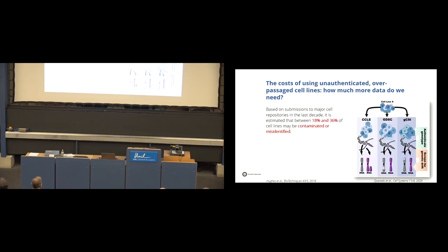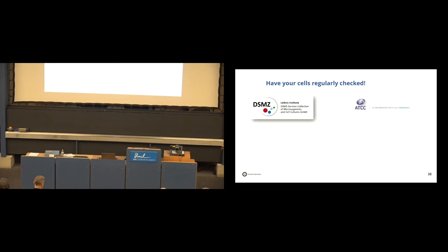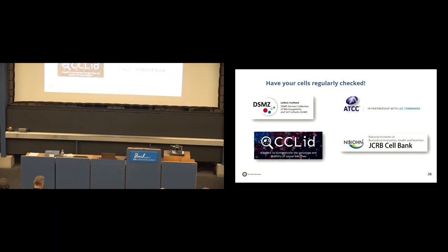So, what are the costs of unauthenticated cell lines? Between 18 and 36% of cell lines may be contaminated or misidentified at the moment of 2018 when Hughes published his results. So, that's quite a lot between 18% and 36%. So, that really shows what others have already argued this morning, that you have to have yourselves regularly checked either by DSMZ, ATCC and whatever organization that provide these services.